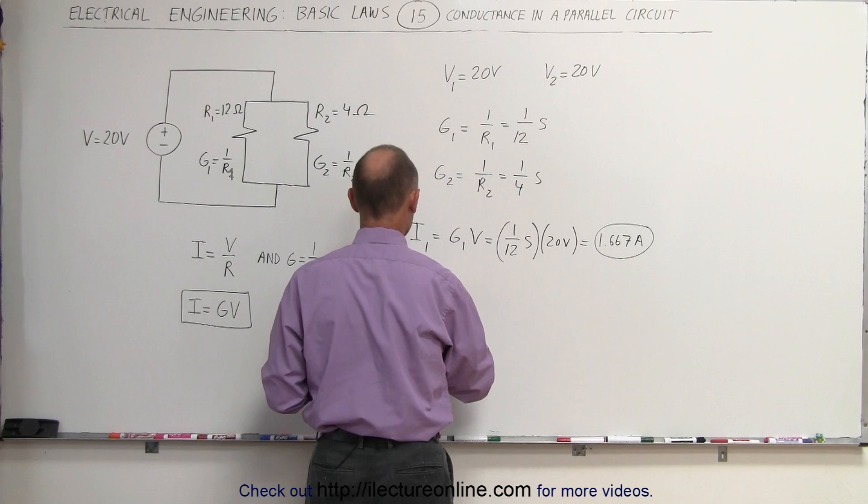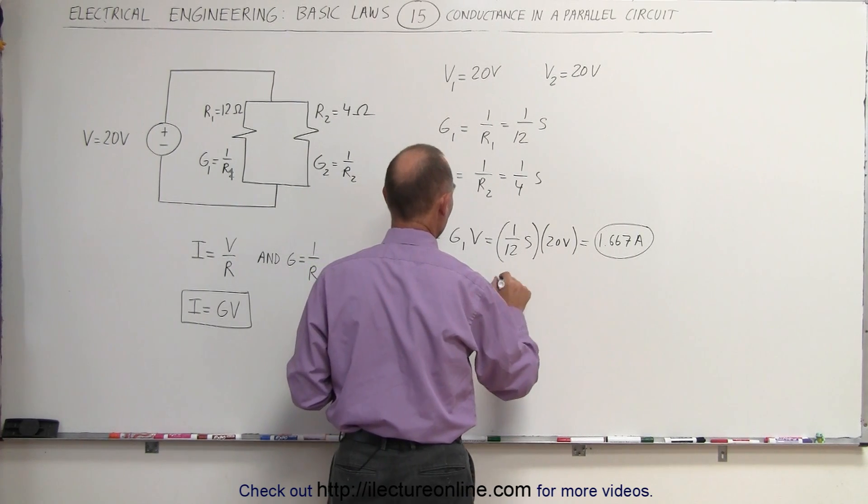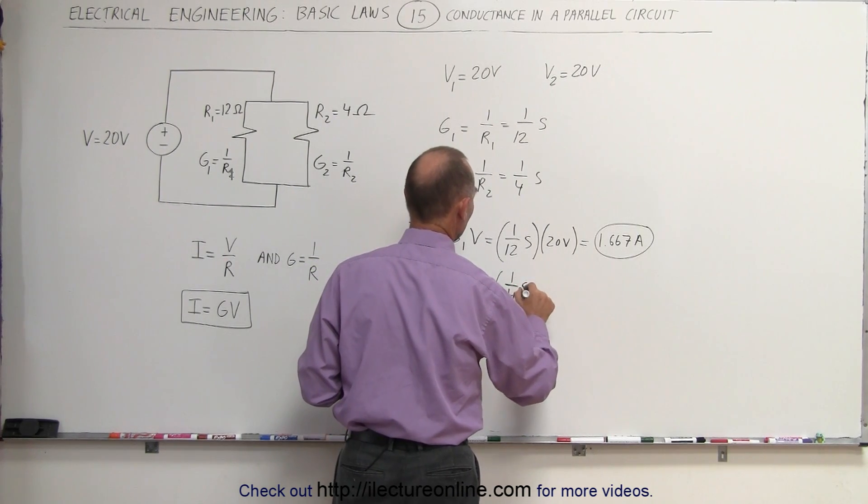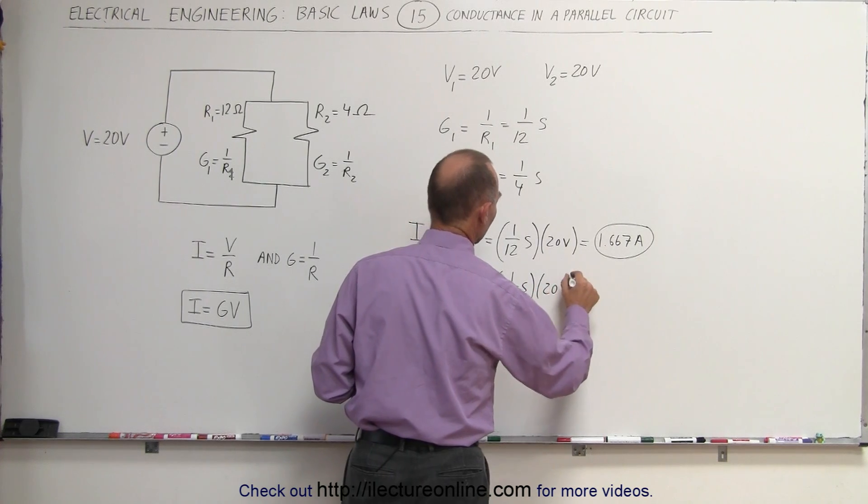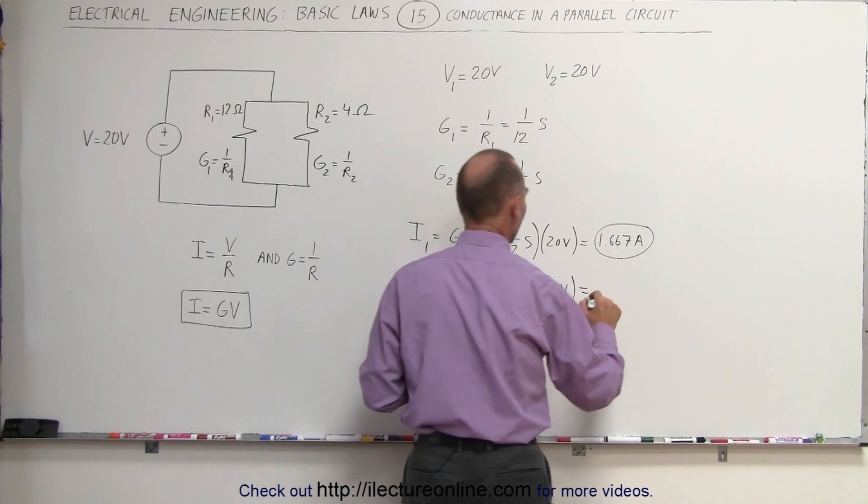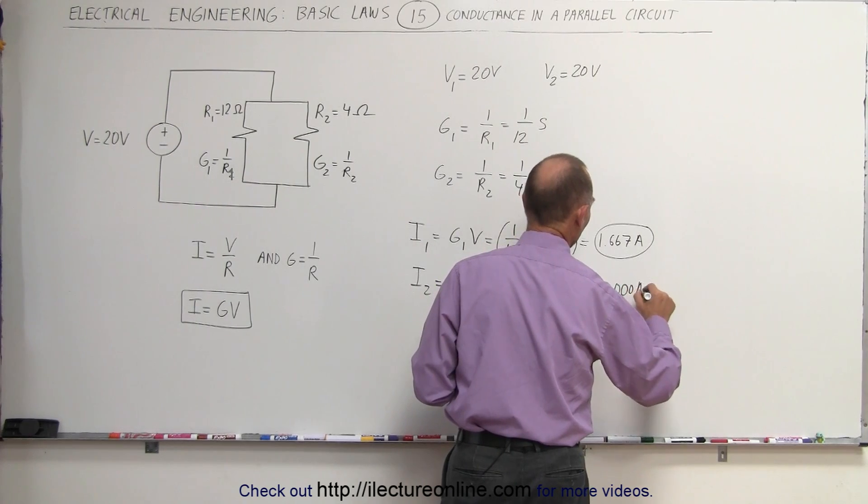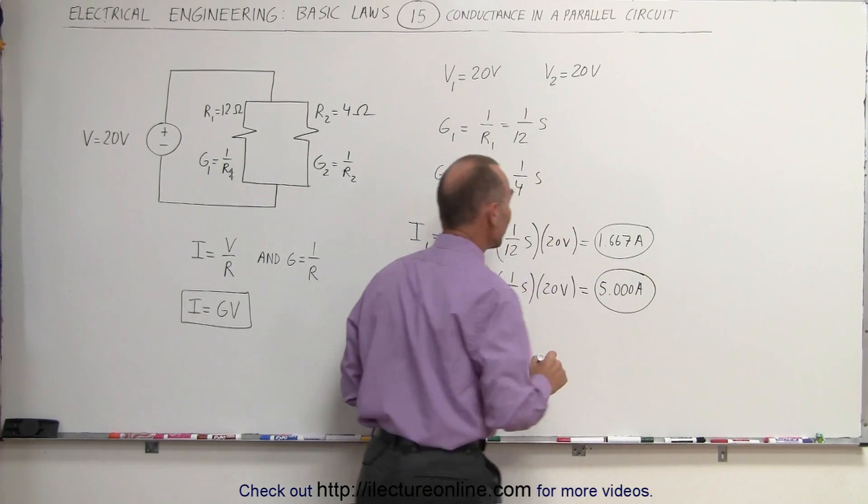And I2 is equal to G2 times V. G2 is 1 over 4 Siemens times 20 volts. That's equal to 20 divided by 4, which is 5.000 amps. There is the current in the second branch.